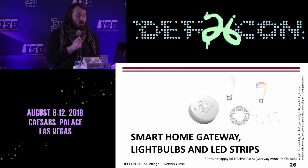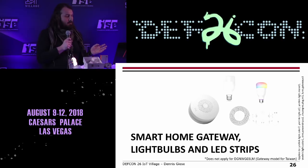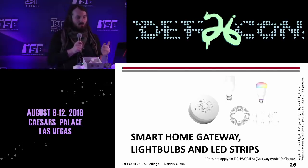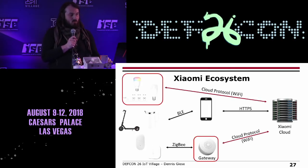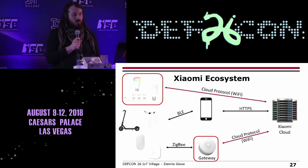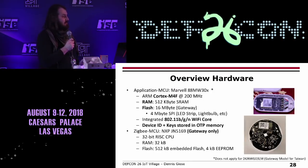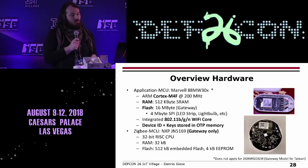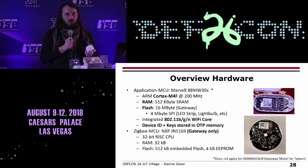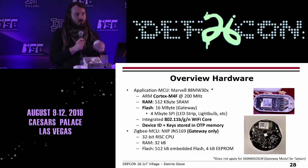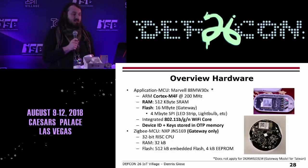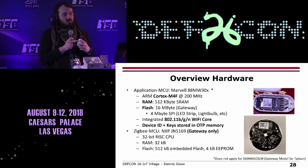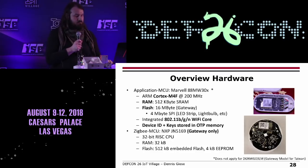Now let's look at our devices — the smart home gateway, light bulbs, and LED strips. I put them in one group because they have the same processor, chip, and memory layout. They use the Marvell CPU, a Cortex-M4F running at 200 MHz, with 512 kilobytes of RAM. Light bulbs have 4 megabytes of SPI flash and the gateway has 16. All of them have a Wi-Fi core, and the device ID and key are stored in one-time programmable memory — so if you dump the SPI flash you won't get the key because it's on the chip. The gateway also has an NXP Zigbee chip for handling Zigbee devices.